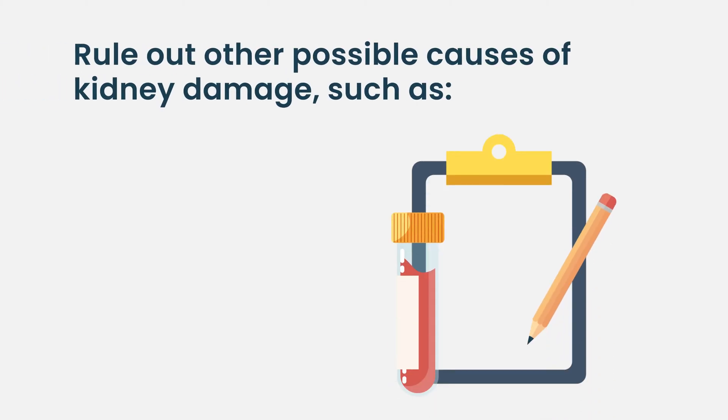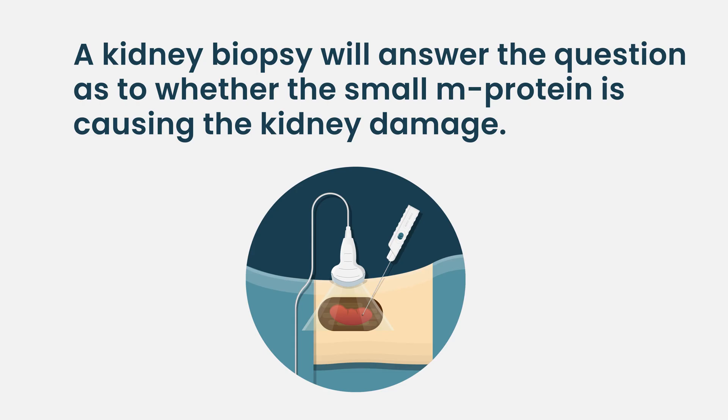Why do you request a kidney biopsy? If you have kidney damage but no criteria to diagnose myeloma, and you have a patient with renal insufficiency — and most of those patients, especially in the older age group, will have hypertension and diabetes — then if you have some other cause, you can attribute the renal insufficiency to that. However, if there is rapidly worsening kidney function — a patient on hypertension for 20 years and suddenly the creatinine goes from 1.5 up to 4 — that is the kind of patient where you detect an M spike.